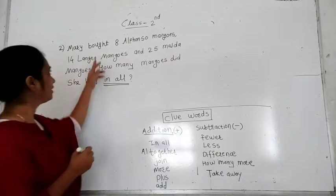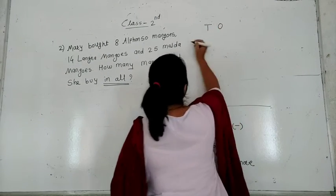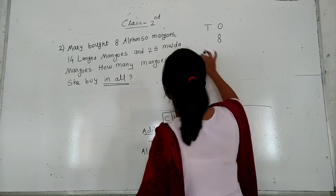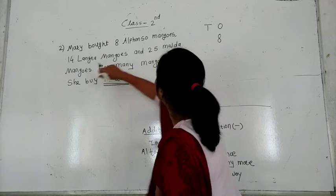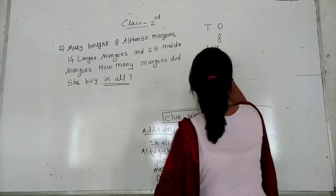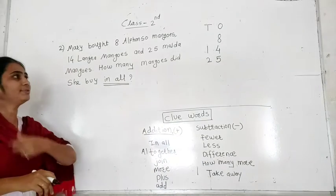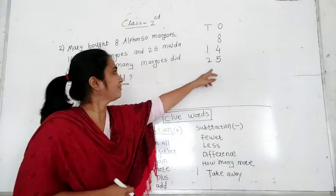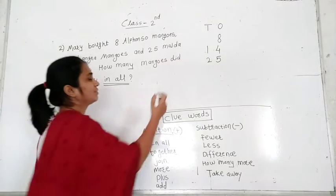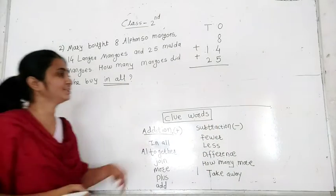First I arrange the numbers according to their places. I write here tens and here is the ones. The 8 Alphonso mangoes — I write 8 in the ones digit column because there is no tens digit. The second is 14 and the third is 25. We have already decided we have to do addition, so I put the sign of plus.